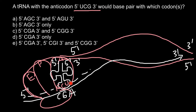So the first uracil of the tRNA anticodon would be paired with adenine. Cytosine would be paired with guanine. And guanine would be paired with cytosine. So the first, second, and third positions of the anticodon correspond to the first, second, and third positions of the codon.